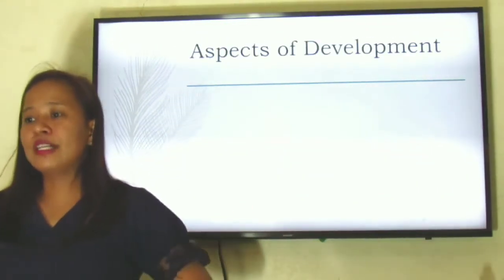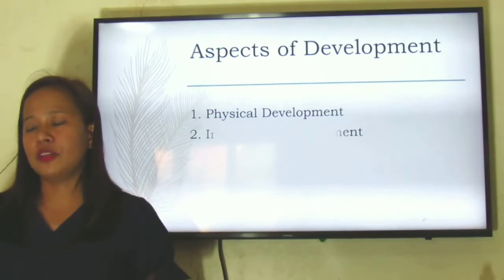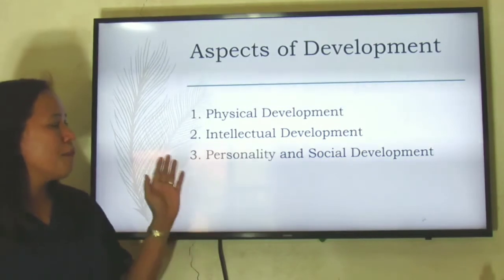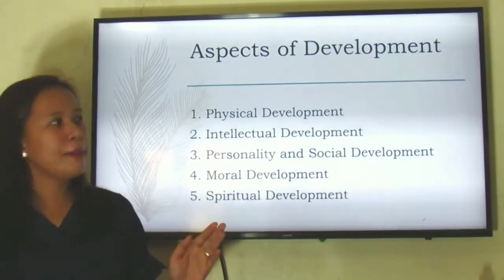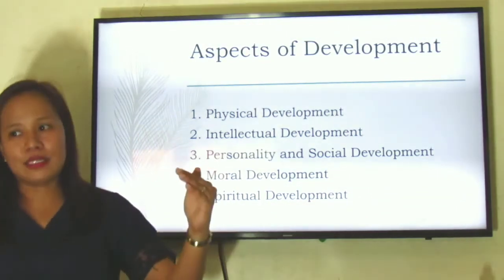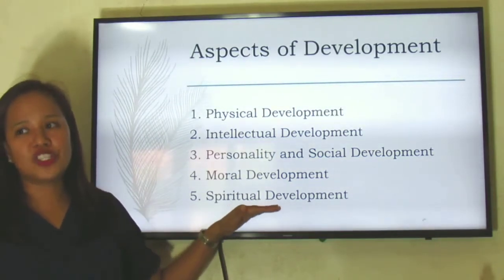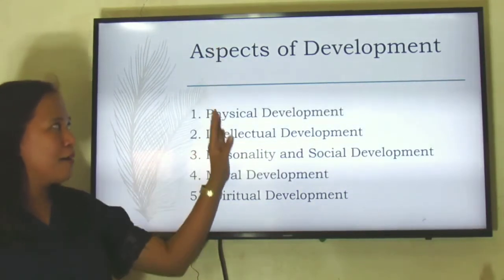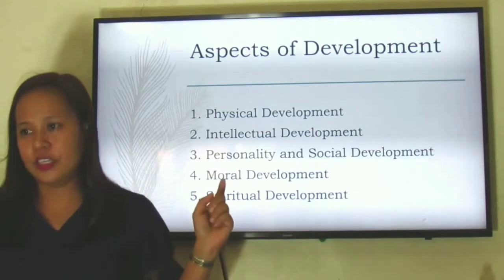Now let's look into the various aspects of development. These are the aspects: physical, intellectual, personality, social, moral development, and institutional development. I remember when I discussed Maslow's Hierarchy of Values — the apex of all the aspects of development is actually the institutional development. As Christians and practicing Catholics, we must make sure we develop all these aspects, and the most important would be institutional development.